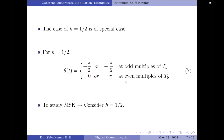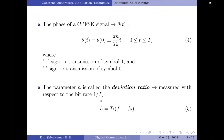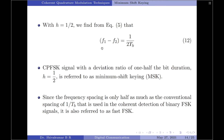Going back to equation 5 for the deviation ratio h, substituting h = 1/2 gives f₁ − f₂ = 1/(2T_B). This is equation 12: the frequency deviation — the difference between the two signaling frequencies — equals half the bit rate, since 1/T_B = R_b. This is the minimum frequency spacing that allows the two FSK signals representing symbols 1 and 0 to be coherently orthogonal, meaning they do not interfere with one another during detection. Therefore, a CPFSK signal with deviation ratio h = 1/2 is referred to as the minimum shift keying technique.